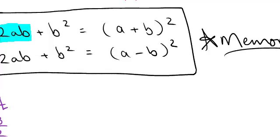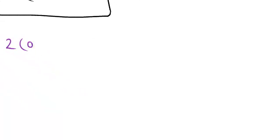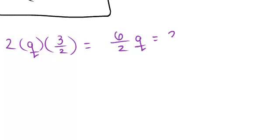Now let's see if this 3q fits this 2ab. Let's see if we can get that to be equal to each other. So 2ab is going to be 2 times q times 3/2. That's going to be 6/2 q, which is equal to 3q. So it works out—it's a perfect fit.